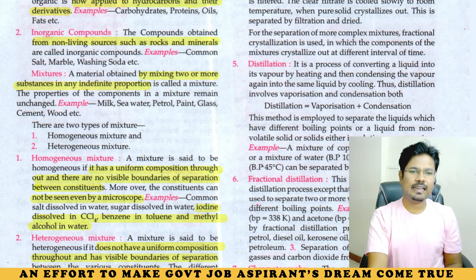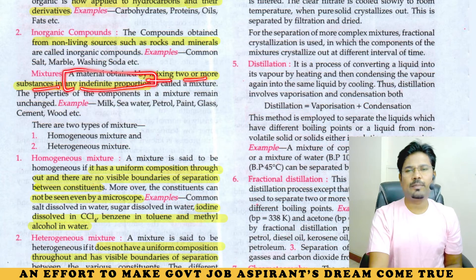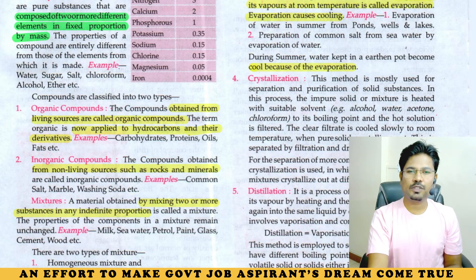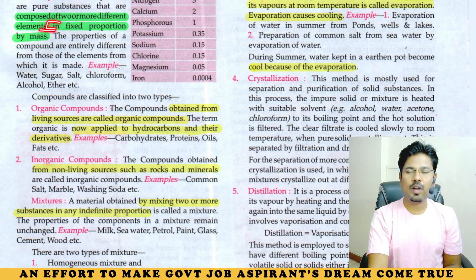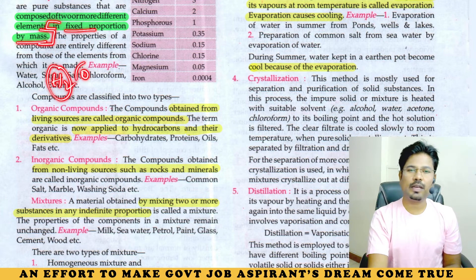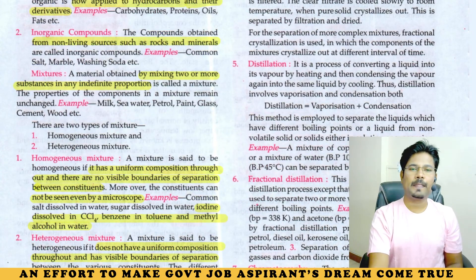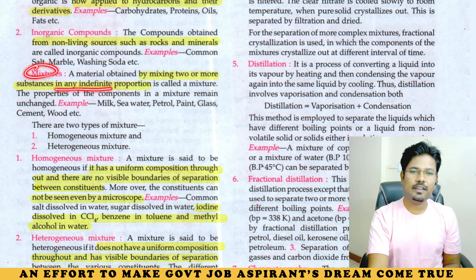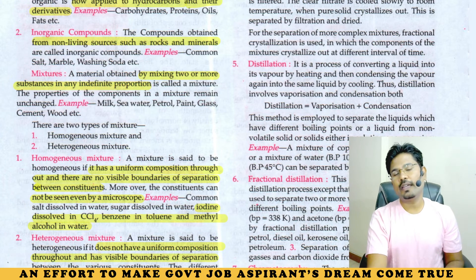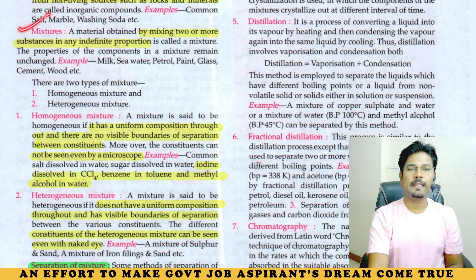Next is mixture. A mixture is formed by mixing two or more substances in indefinite proportion. This is the difference between a compound and a mixture — a compound has elements in fixed proportion by mass, while a mixture has indefinite proportion. Examples of mixtures: milk, sea water, petrol, paint, glass, and so on.